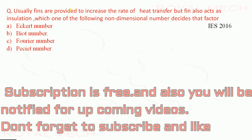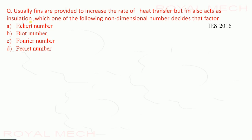Usually pins are provided to increase the rate of heat transfer, but in some cases pins also act as insulation. Which non-dimensional number decides that factor? Options are: Biot number, Fourier number, and others. The Biot number decides whether a pin acts as insulation or enhances heat transfer. Therefore option B is correct.